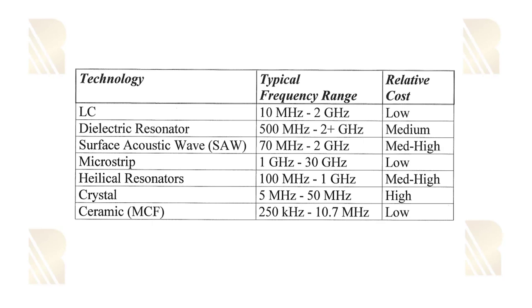Helical resonators do not operate at very high frequencies. Crystal filters operate only up to 550 MHz and have a really high cost, but they are small in size. These last filters — including small ceramic filters — are commonly used for low frequency and intermediate frequency applications, roughly 5 to 50 MHz or 250 MHz to 10.5 MHz ranges.